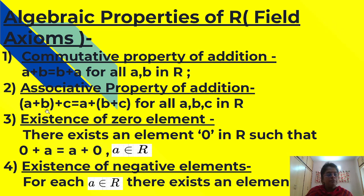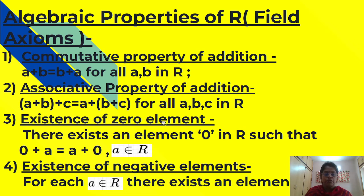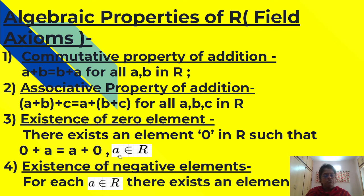Second property: associative property of addition. It means that (a plus b) plus c is equal to a plus (b plus c) for all a, b, c in R. Third property: existence of 0 element. There exists an element 0 in R such that 0 plus a is equal to a plus 0, where a belongs to R.